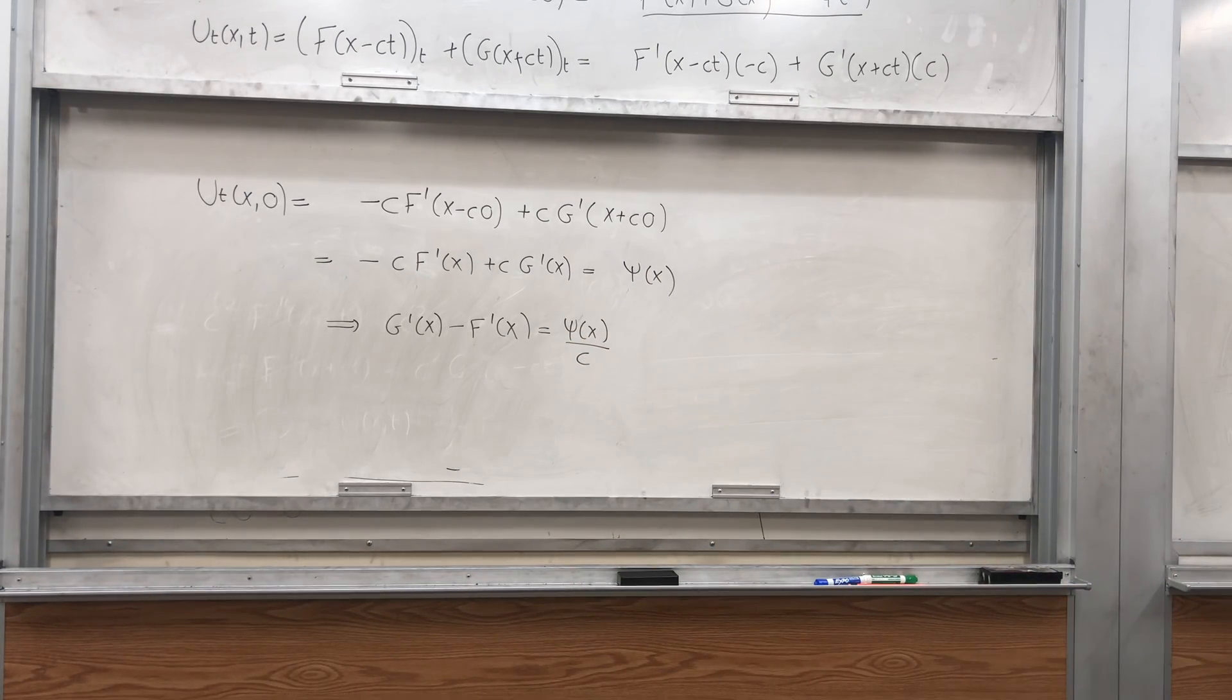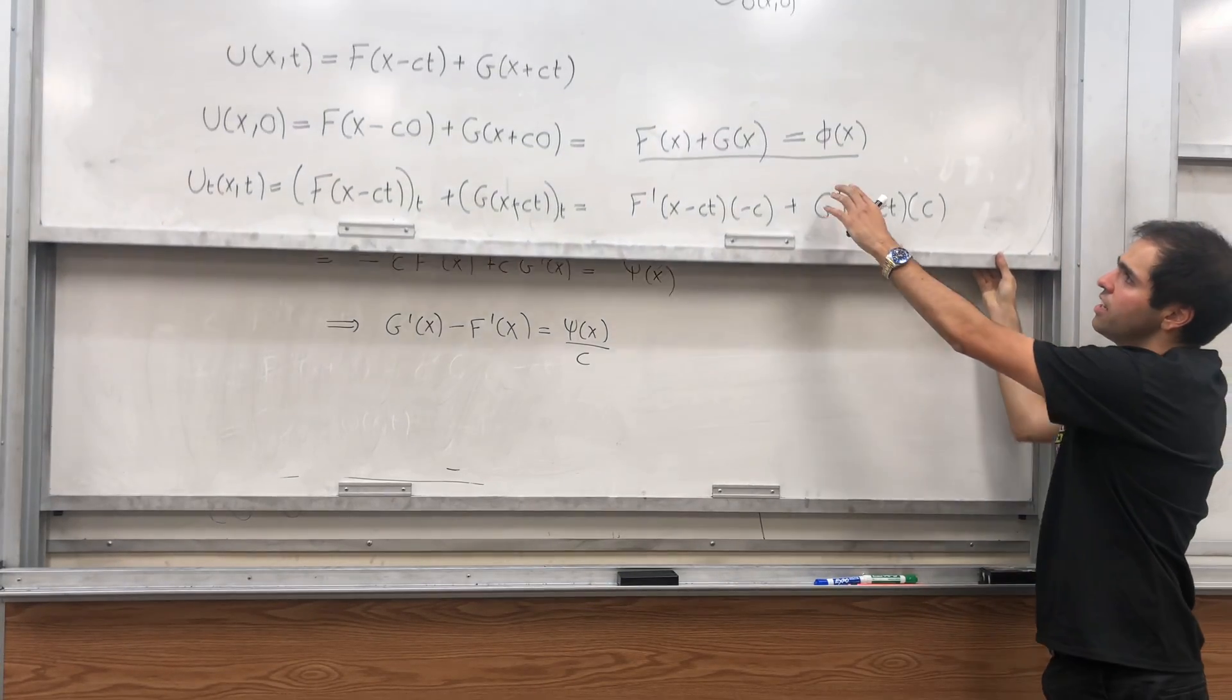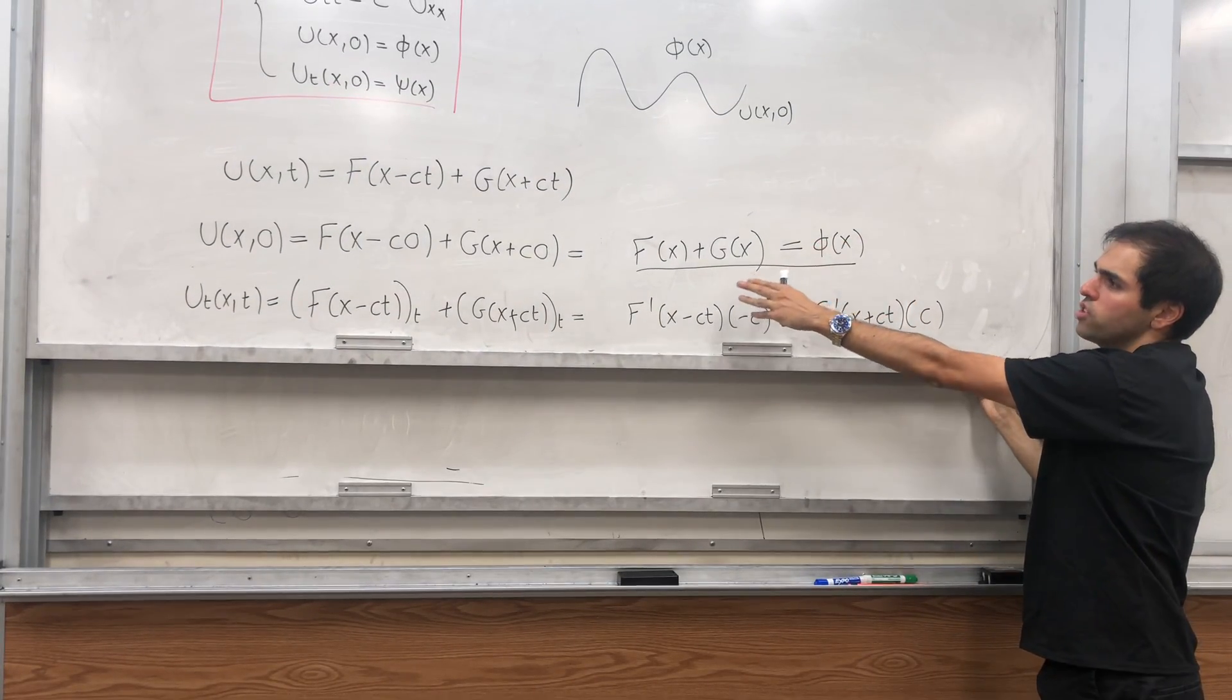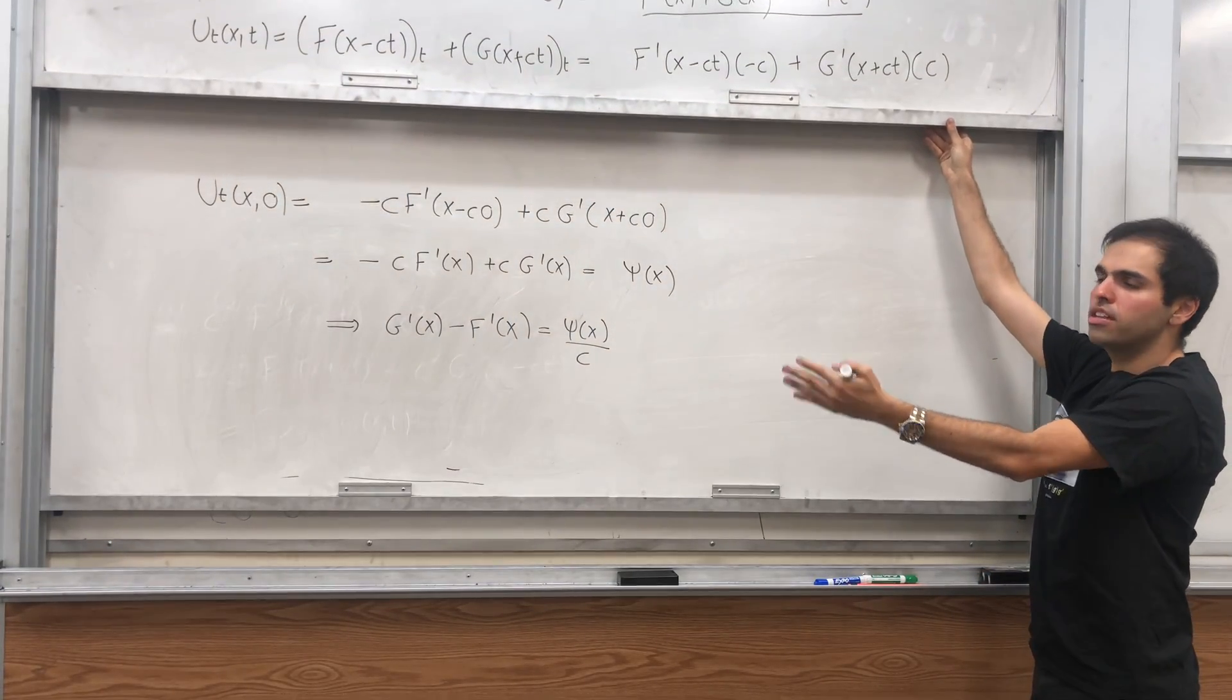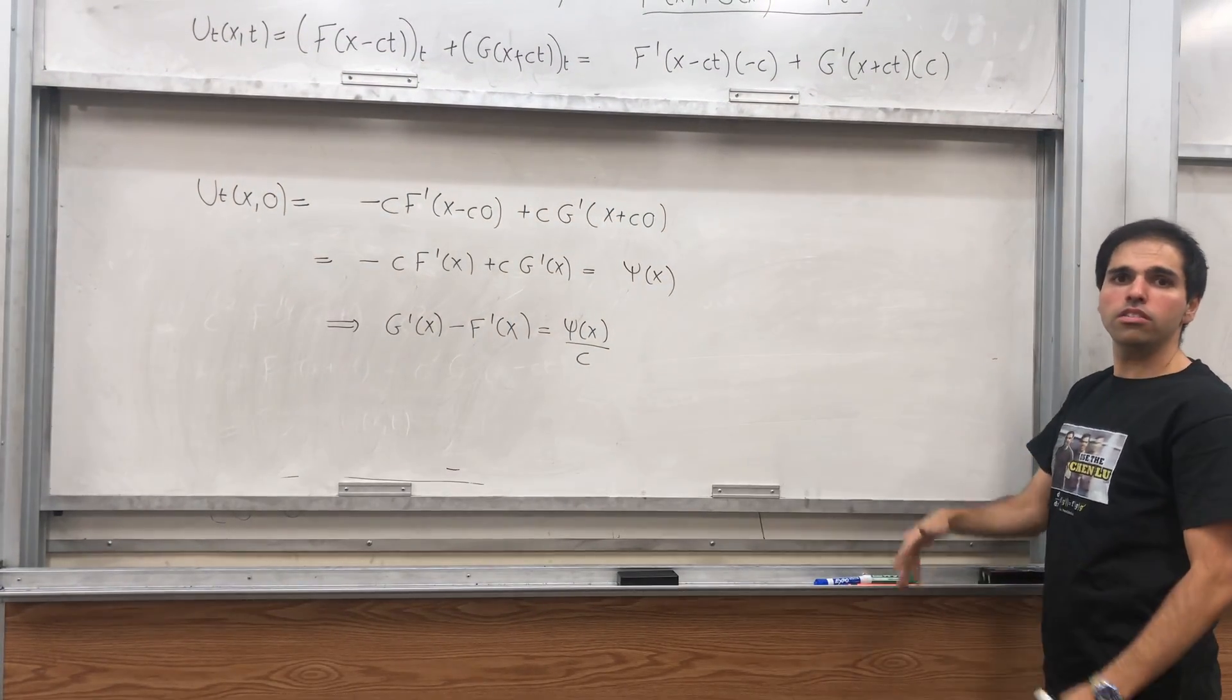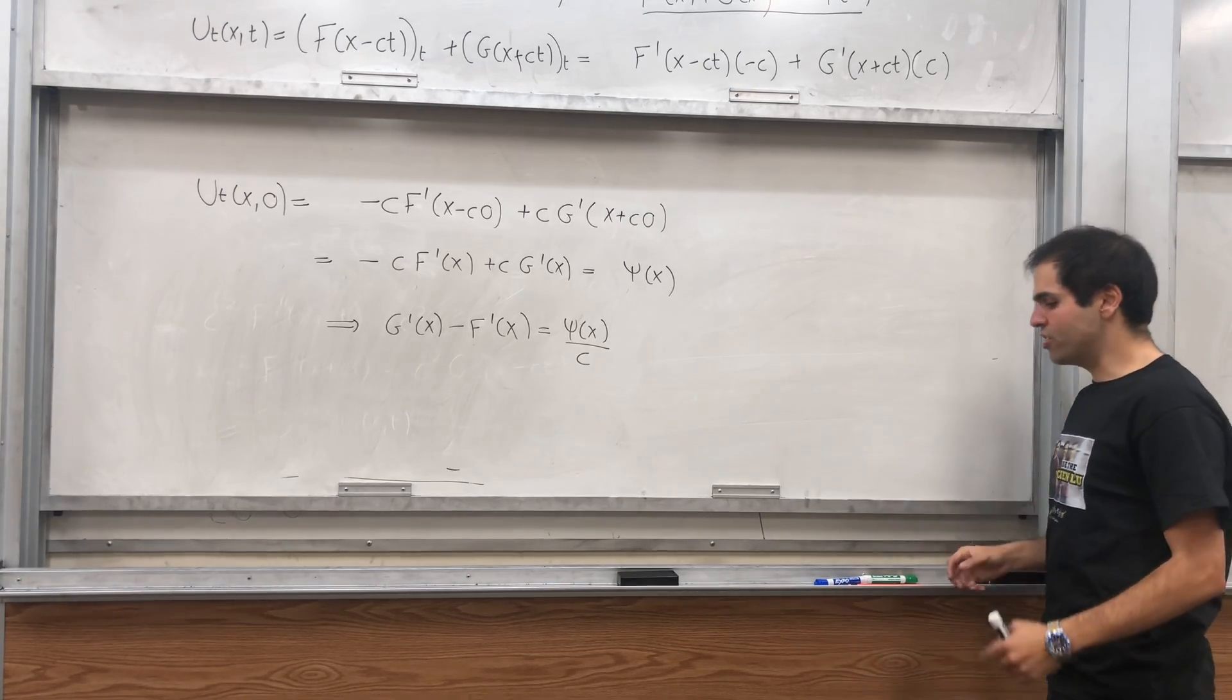And we get G prime of x minus F prime of x equals psi of x over c, which is the second equation. But notice this equation involves just F and G, and this equation involves derivatives.